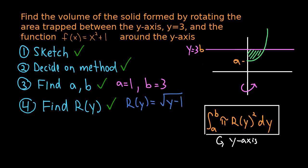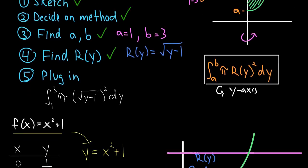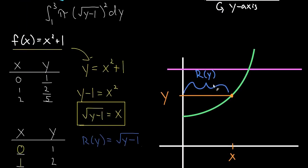Finding r(y) is complete: r(y) equals the square root of y minus 1. The hard work is done — the last step is just to plug everything into the formula and solve. We take the disk method formula, plug in a equals 1, b equals 3, and r(y) equals the square root of y minus 1, giving us the integral from 1 to 3 of pi times the square root of y minus 1, squared, dy.